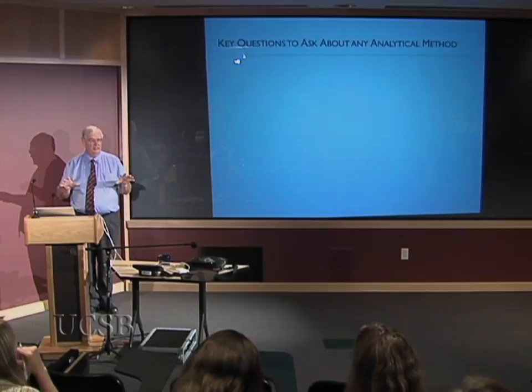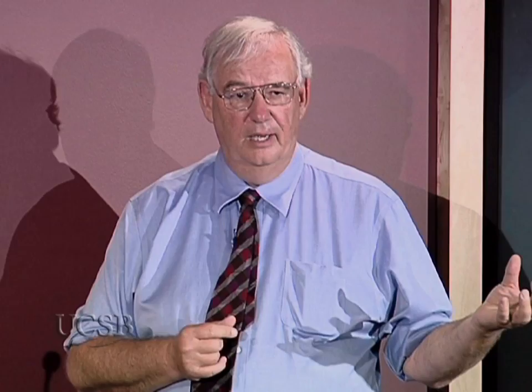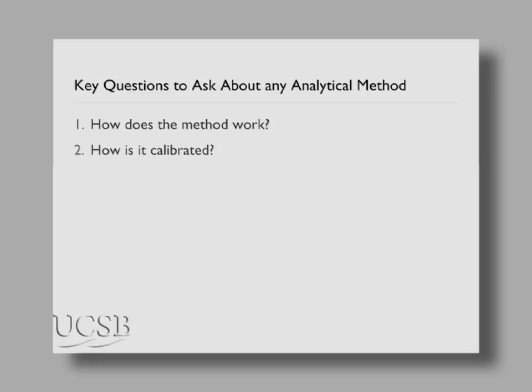When thinking about an analytical method for your own purposes, ask: how does it work? If you don't know how it works, the chance you'll ever make it work right is slim — because the moment it goes wrong, you won't notice. How is it calibrated? All chemical measurements take an output number and ratio it to a number from something where you thought you knew the answer. This process is called calibrating the sample.